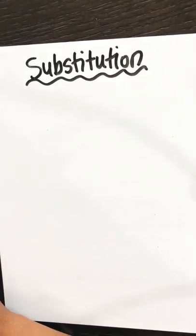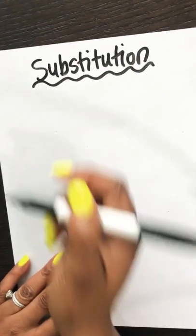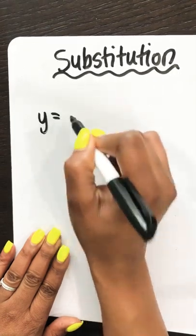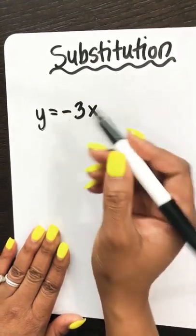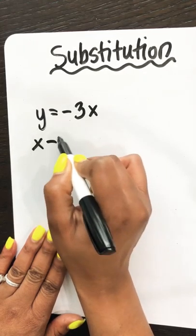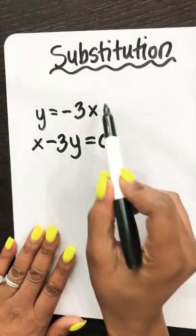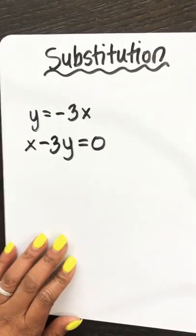I'm going to jump right into an example because I think that is the best way for us to truly understand. Let's start off with a simple example. We have two equations: y equals negative 3x, and the second equation is x minus 3y equals 0. So here we have a system of equations.